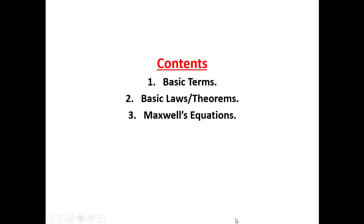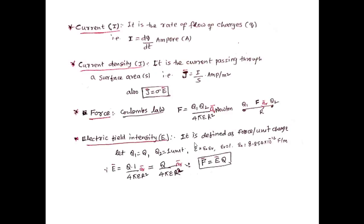Today we will continue with the basic terms used in Electromagnetic Theory. Basic terms include basic laws and theorems and Maxwell's equations. Before going into Electromagnetic Field Theory, we should know what current is — it is defined as the rate of flow of charge, and the unit is ampere. Next is current density: it is the current passing through a surface area S, given by J bar = I/S ampere per meter square. Also, J bar = sigma E bar, which is called Ohm's law.